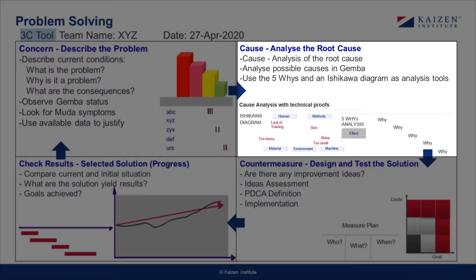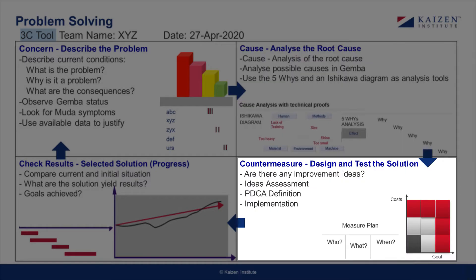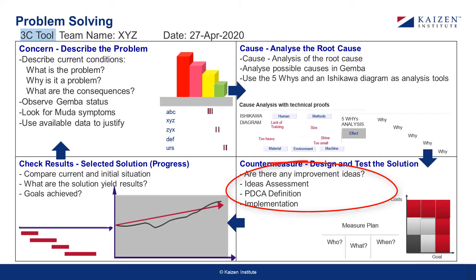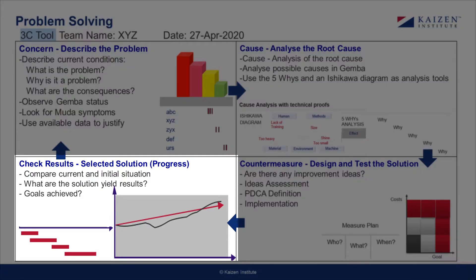Under the cause column, you describe the probable reason for the problem. The cause column should describe the cause analysis with technical proofs. The countermeasure column incorporates designing and testing of solutions. Put down the solution which may fix the problem. Invite others to collaborate and put down the potential solutions in the countermeasure column. The countermeasure section involves improvement ideas, idea assessments, PDCA definition and implementation.